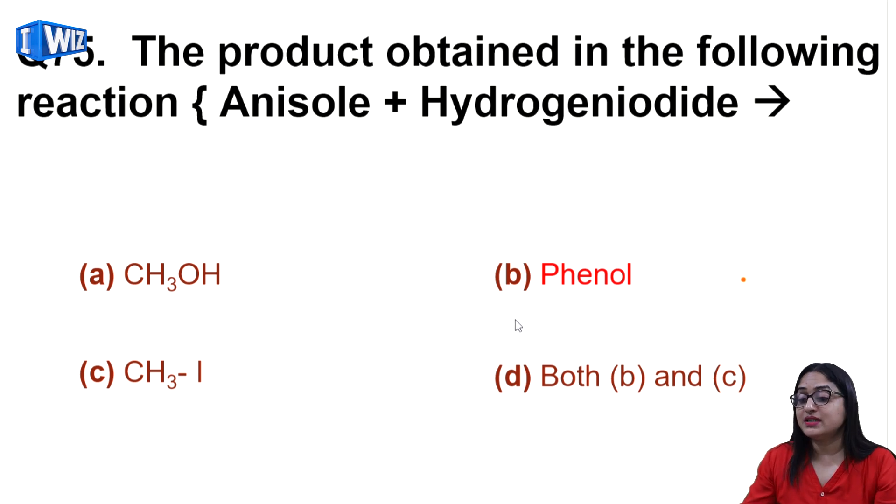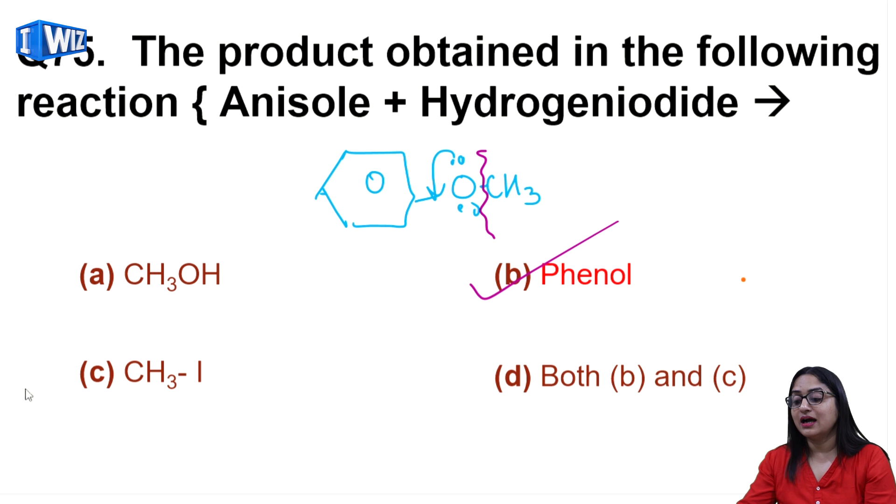75th question is the product obtained in the following reaction: anisole plus hydrogen iodide. When you add hydrogen iodide to anisole - anisole is benzene with O-CH3 - now oxygen is in resonance here, so bond cleavage will take place from this side. Whichever side has oxygen, hydrogen will go there and phenol will form, and also methyl iodide. So both B and C will be obtained, so the correct answer will be D option.